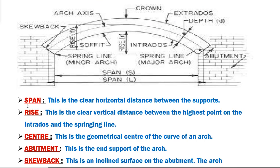The next component part is span. Span is the clear horizontal distance between the two end supports, or between the two abutments. In this image, this is the distance which is in between the two end supports of an arch. The clear distance between the two end supports is the span.